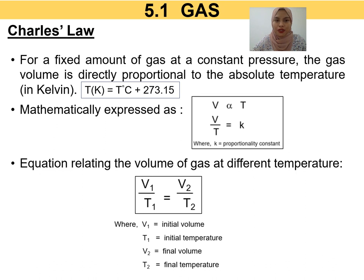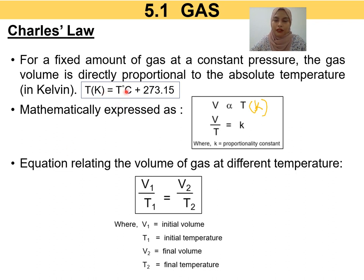The next gas law is Charles' Law, which states that volume is directly proportional to temperature at constant pressure and number of moles. The temperature must be in Kelvin. If you are given temperature in degree Celsius, just add 273.15 to convert to Kelvin. Unlike Boyle's Law, Charles' Law specifically requires temperature in Kelvin no matter what — the volume unit (mL or L) doesn't matter as much.